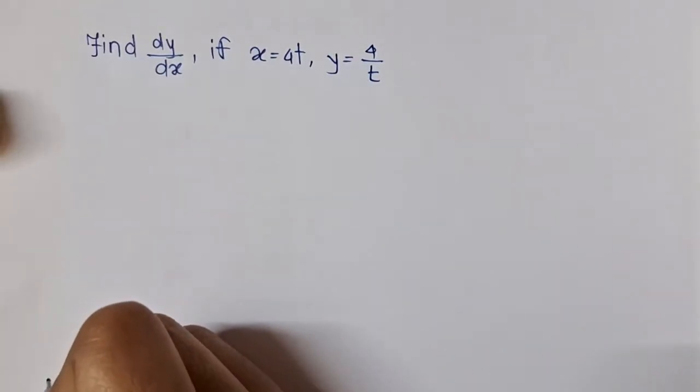Hello friends, today we are going to find dy/dx if x = 4t and y = 4/t.